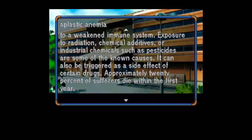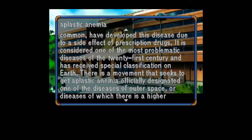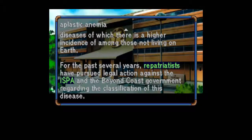Approximately 20% of sufferers die within the first year. Many residents of Beyond Coast suffer from secondary aplastic anemia as a result of radiation exposure. Others on the colony, where drug injuries are common, have developed this disease due to a side effect of prescription drugs. It is considered one of the most problematic diseases of the 21st century and has received special classification on Earth. There is a movement that seeks to get aplastic anemia officially designated one of the diseases of outer space, or diseases of which there is a higher incidence among those not living on Earth. For the past several years, Repatriotists have pursued legal action against the ISPA and the Beyond Coast government regarding this classification.